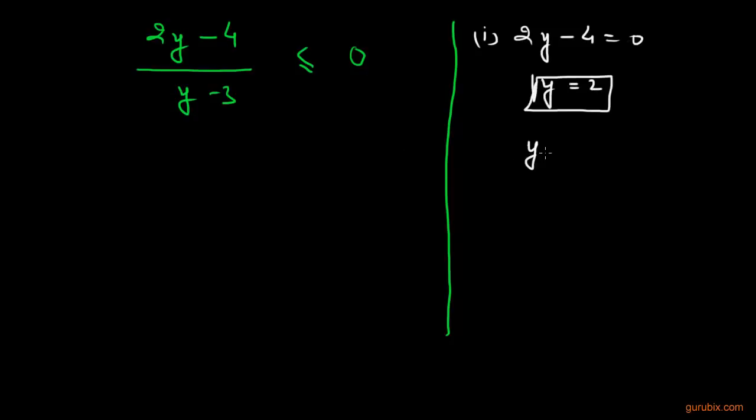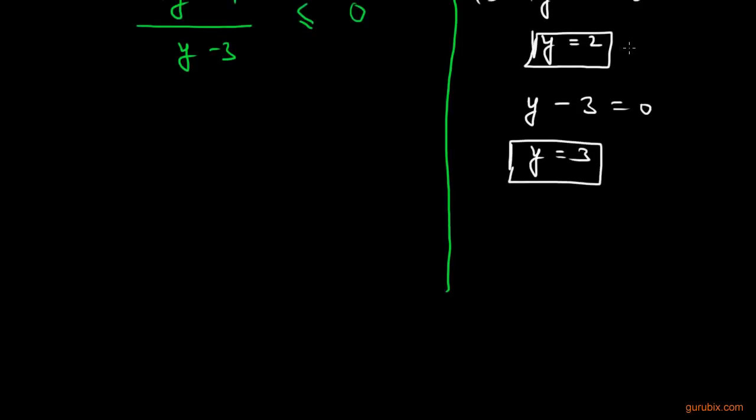Now we shall equate the denominator to 0. Then it will be y - 3 equals to 0. This means y is equals to 3. Now we shall place these two critical points on a real line: 2 is here and 3 is here.